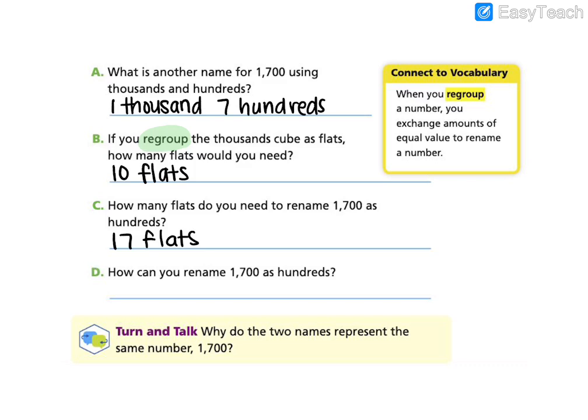So then finally, letter D asks us, how can you rename 1,700 as hundreds? We know we have 17 groups of 100 in 1,700, so we could rename that as 17 hundreds.